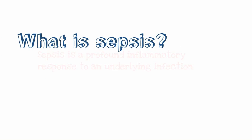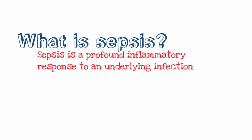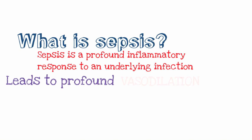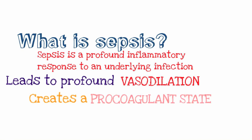So what is sepsis? Sepsis is a very profound inflammatory response to an underlying infection. It leads to significant vasodilation, so your vessels dilate, leading to a drop in blood pressure. Also, because of the inflammatory response, you do have a procoagulant state, so you can develop microemboli that affect perfusion of your organs.